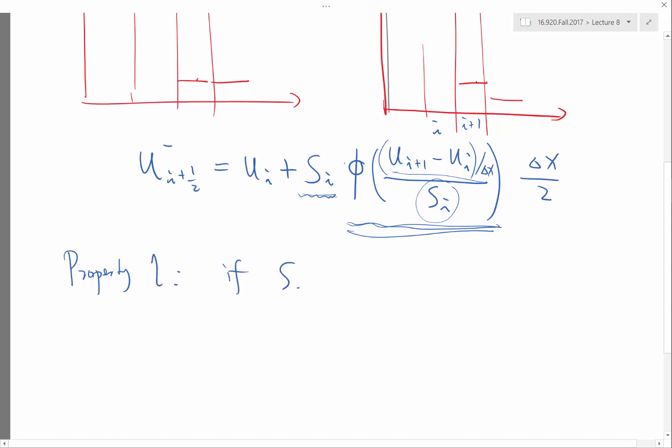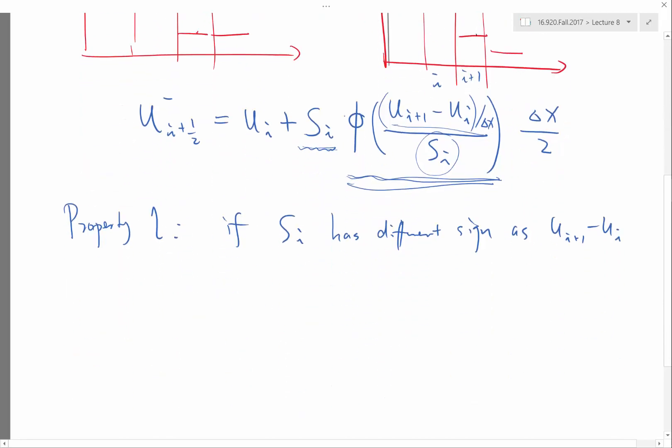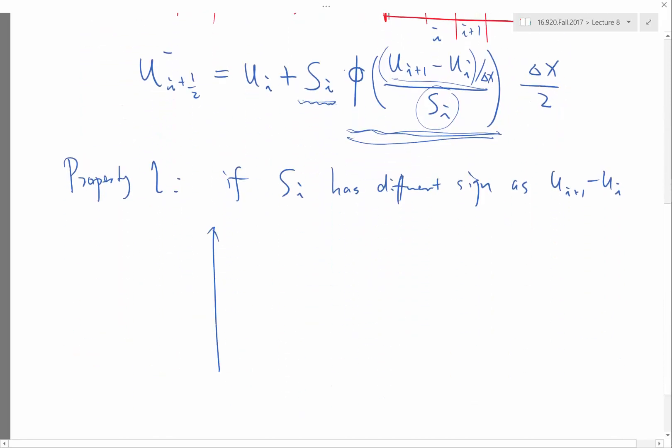all limiters have one property. If S_i has a different sign as u_{i+1} minus u_i, what does that mean? That means I wanted to construct, so this is my u_i. And if S_i is positive, I want to construct something like this.